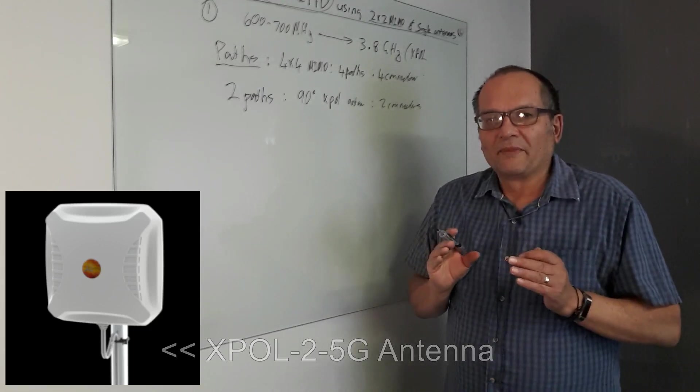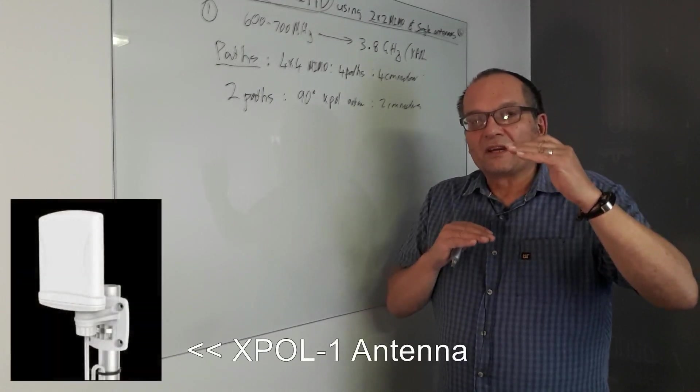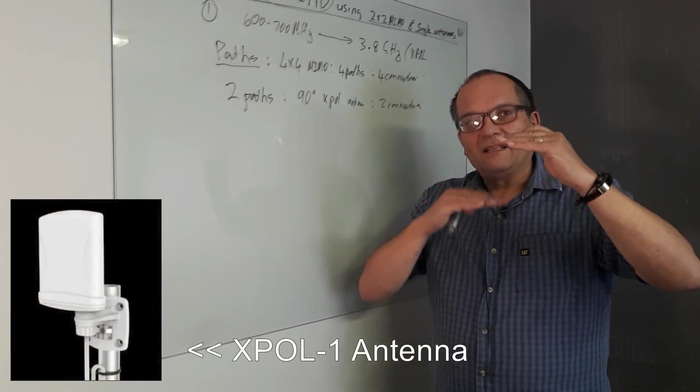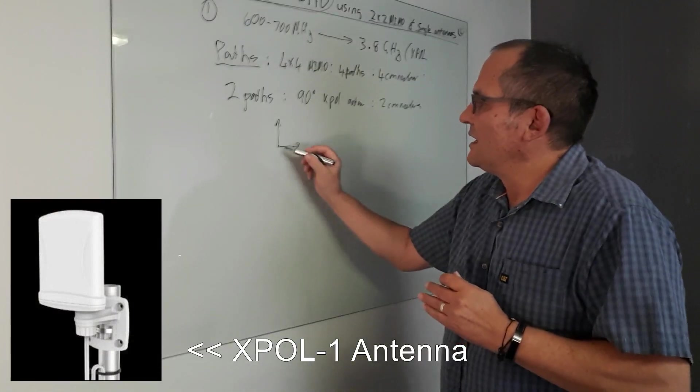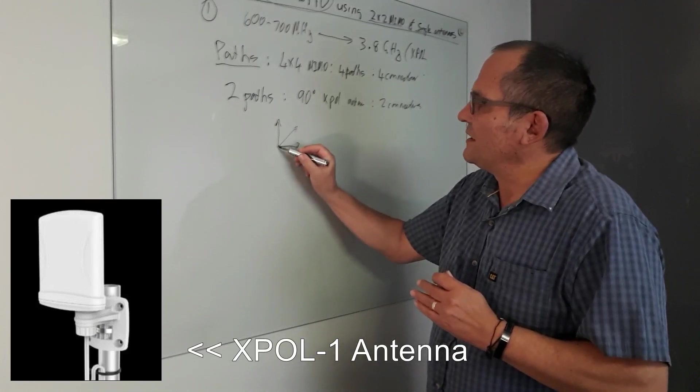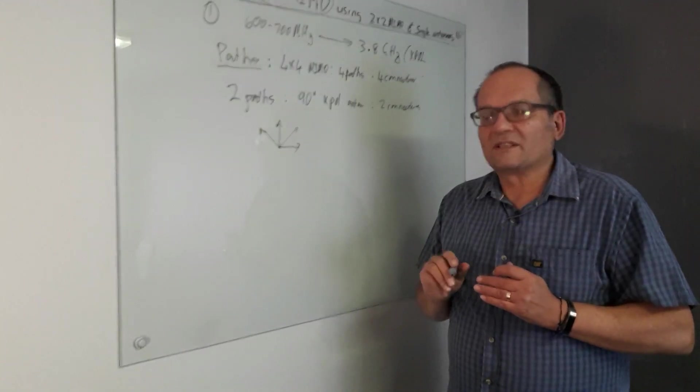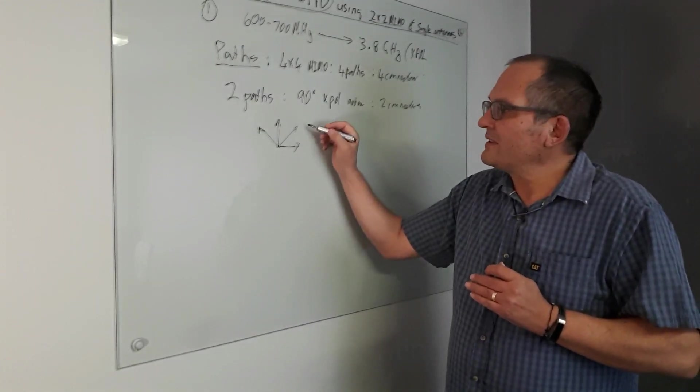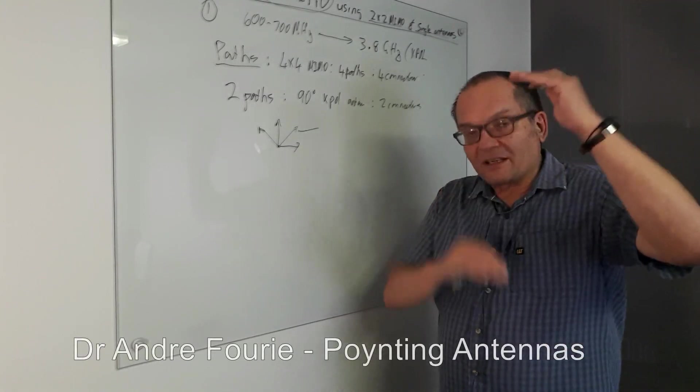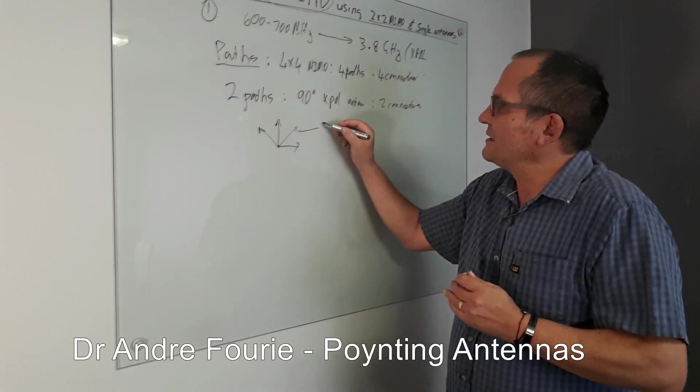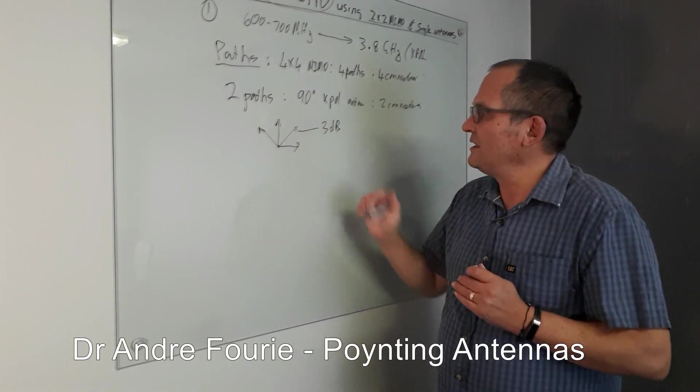Now the only next way you can go is really to do space diversity. But there is a little truth that no one tells you. You can actually go instead of 90 away, instead of 2 polarizations just like this, you can also add 45 degree polarizations. They are only 3 dB decorrelated from the ones next to them, but they give you 3 dB more.